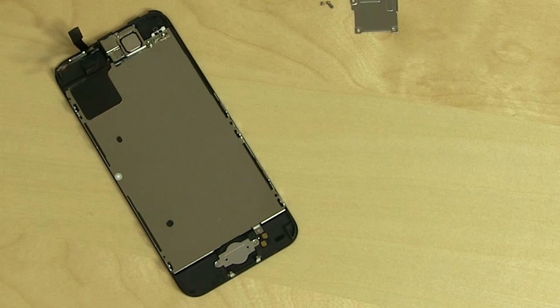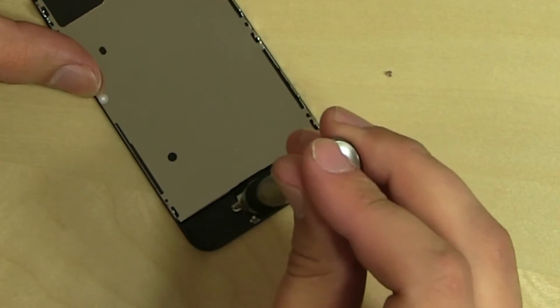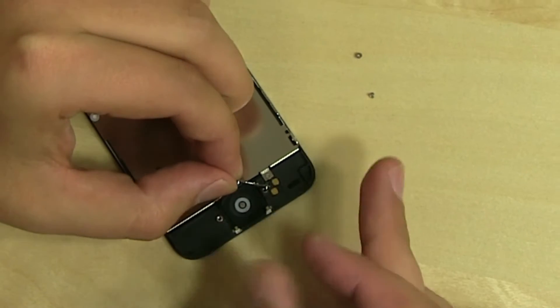Depending on your replacement part, some extra components need to be salvaged from the original assembly. The home button is mounted with two Phillips screws and a metal shield, as well as some glue.